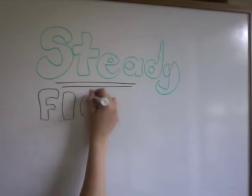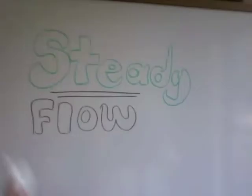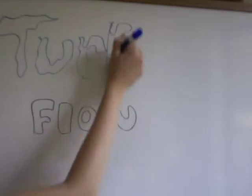When fluids are moving in a consistent manner, we call it steady flow, as represented by the green fluid. And when fluids are constantly changing directions, it's referred to as turbulent flow, which as you can see in the blue fluid, is a lot messier.